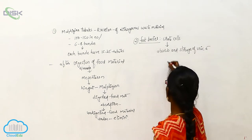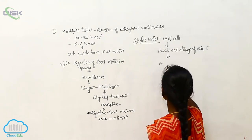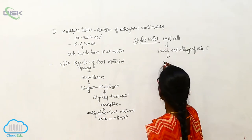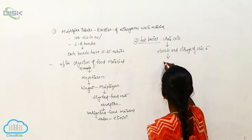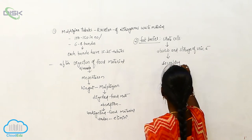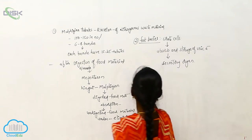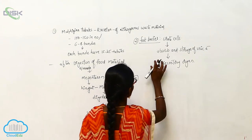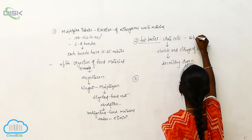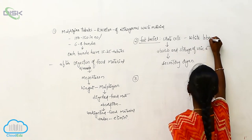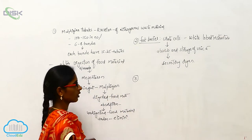Because of the storage of uric acid, the fat bodies are called an absorbo-secretory organ. Fat bodies are white lobed in structure.